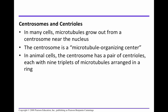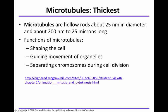Microtubules grow out from a centrosome near the nucleus. The centrosome is a microtubule organizing center. In animal cells, the centrosome has a pair of centrioles, each with nine triplets of microtubules arranged in a ring. Microtubules are the thickest of the three filaments, and they function to shape the cell, guide the movement of organelles, and separate chromosomes during division.